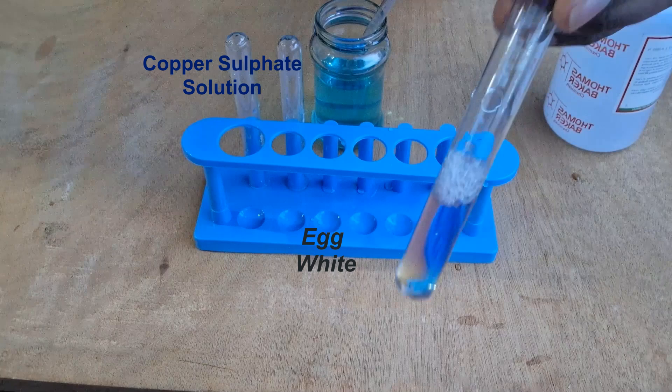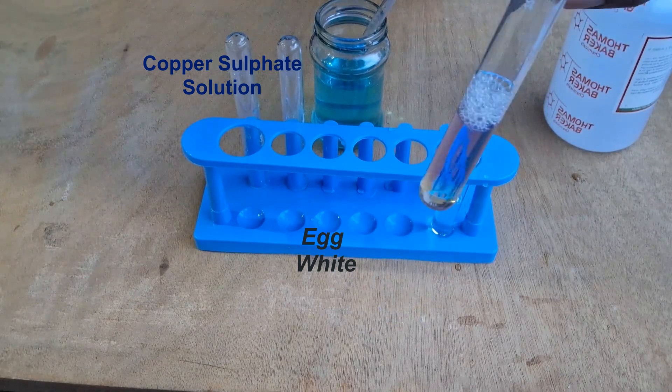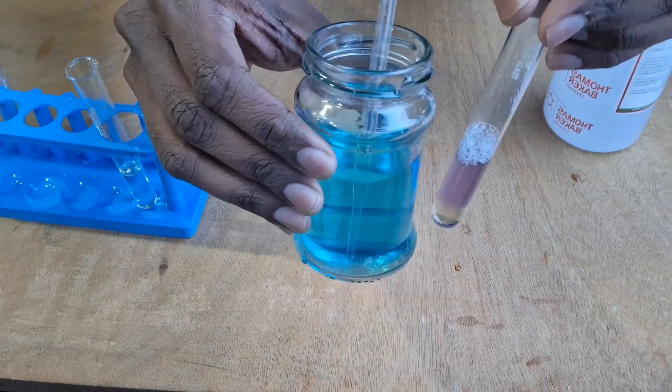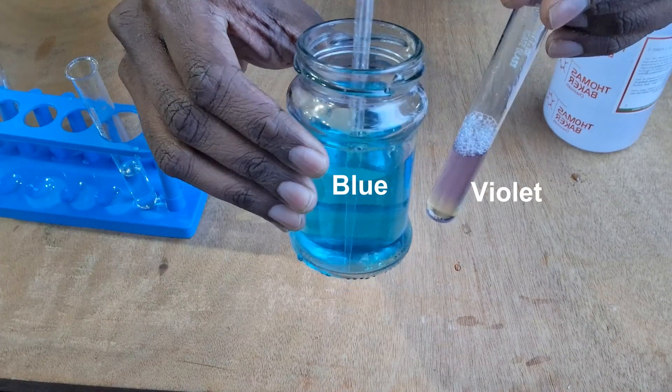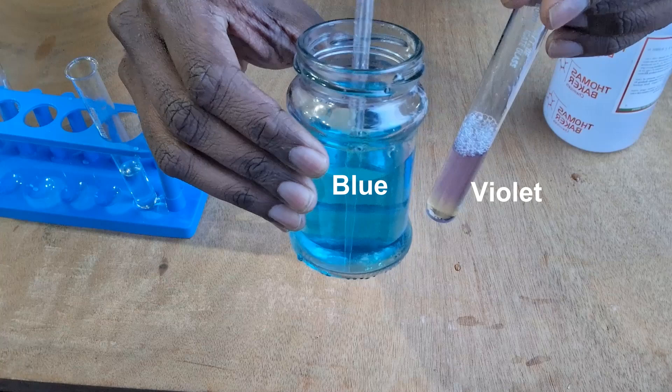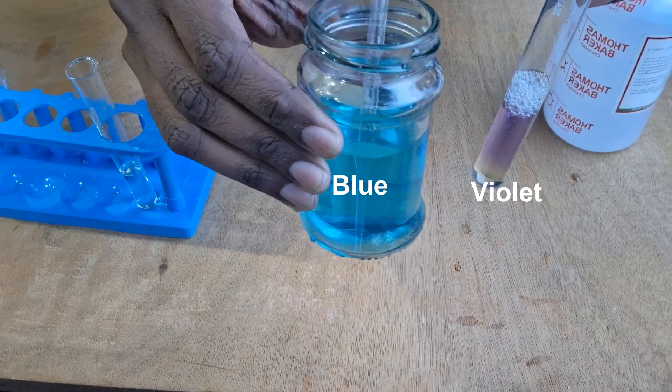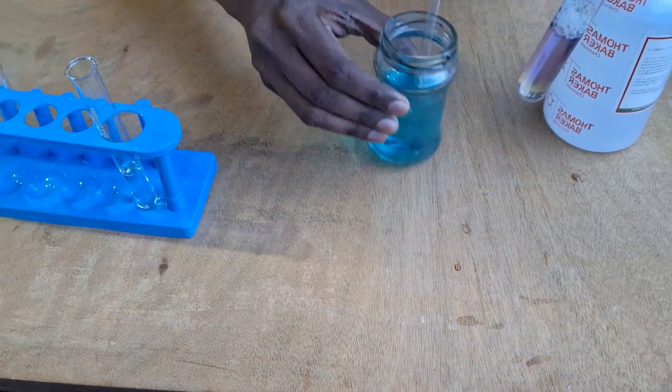Don't you think the color of the liquid in the test tube has changed? Interesting, isn't it? Copper sulfate was blue, but this test tube now looks violet. This change in color to violet happens only in the presence of proteins.